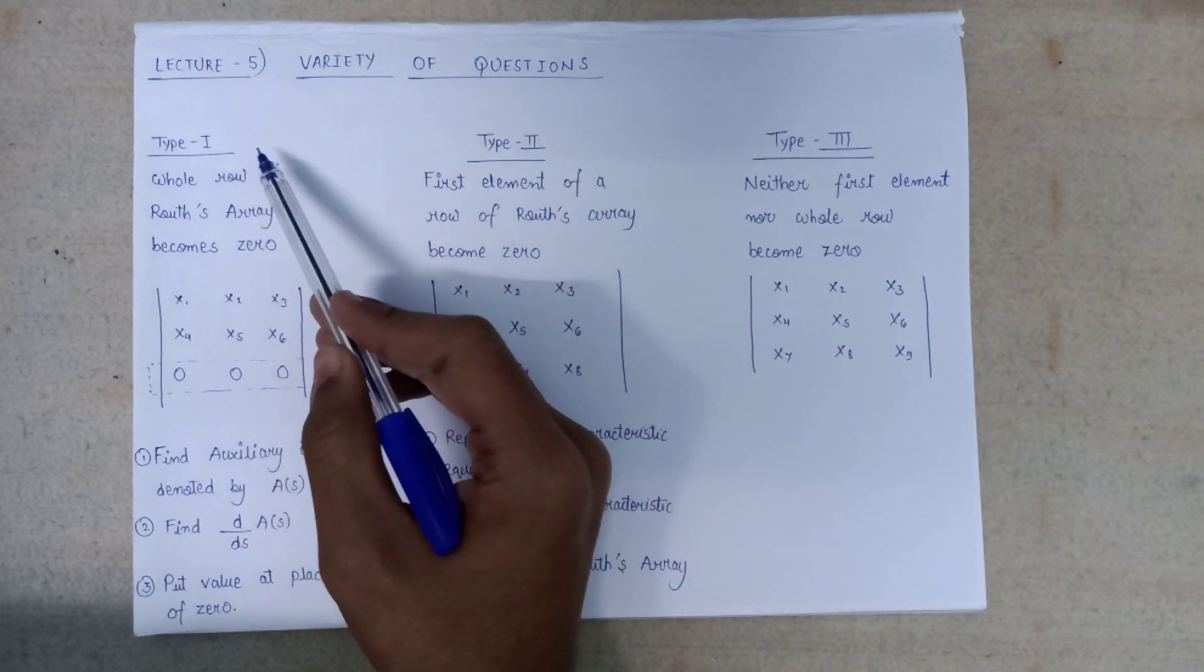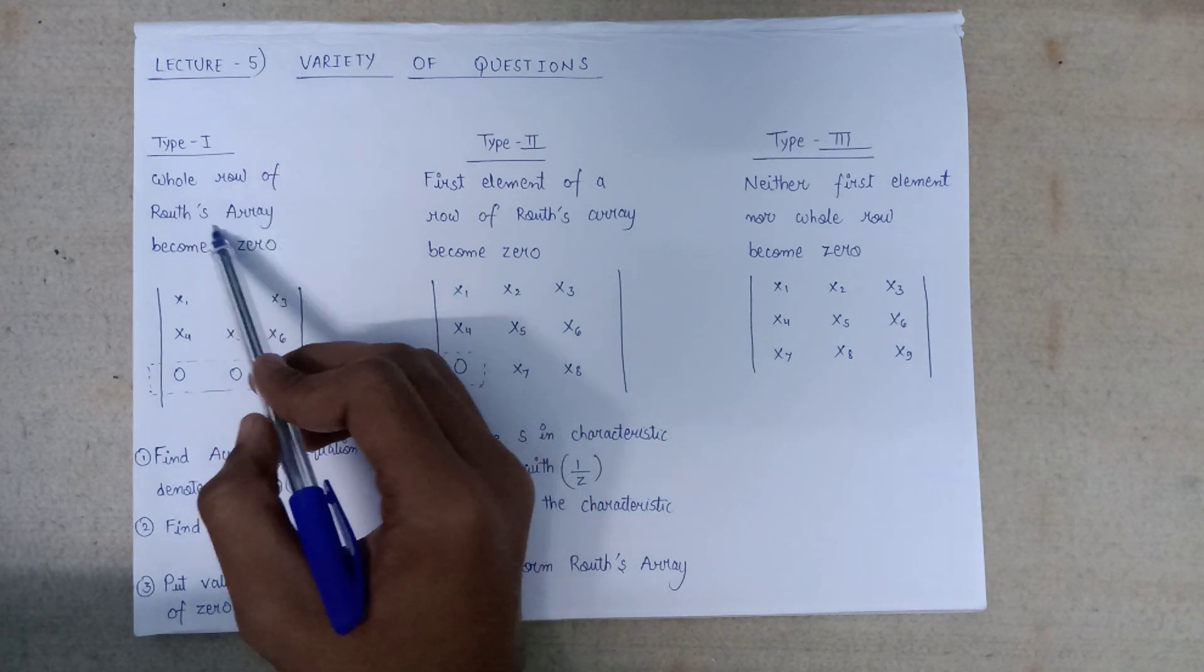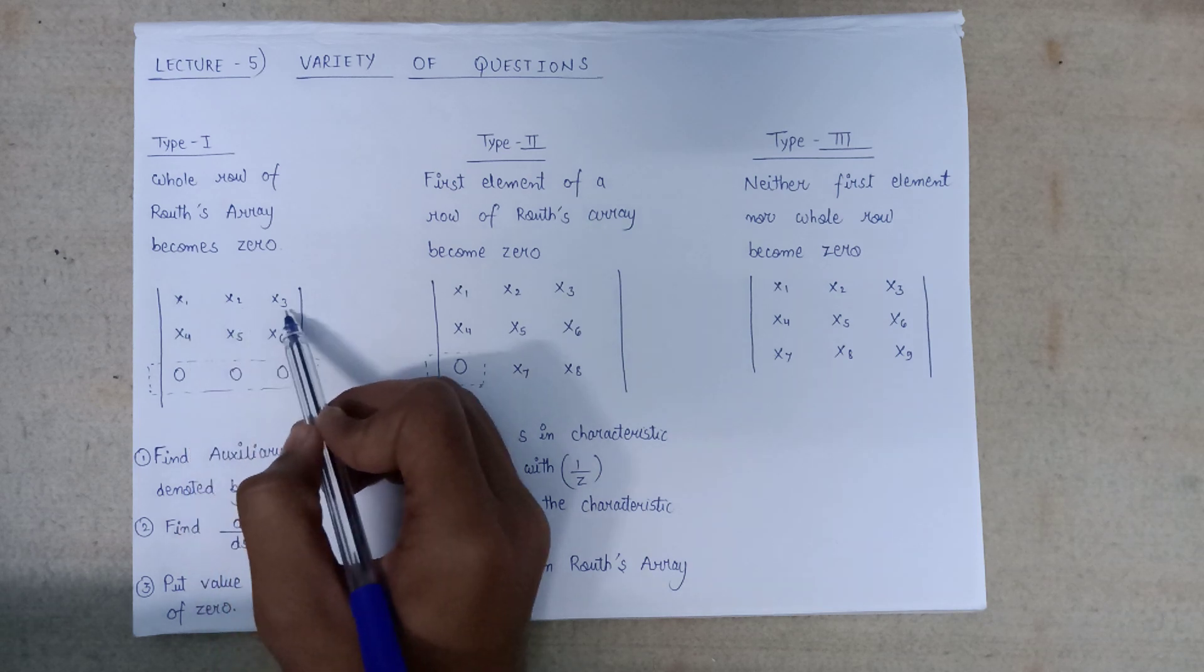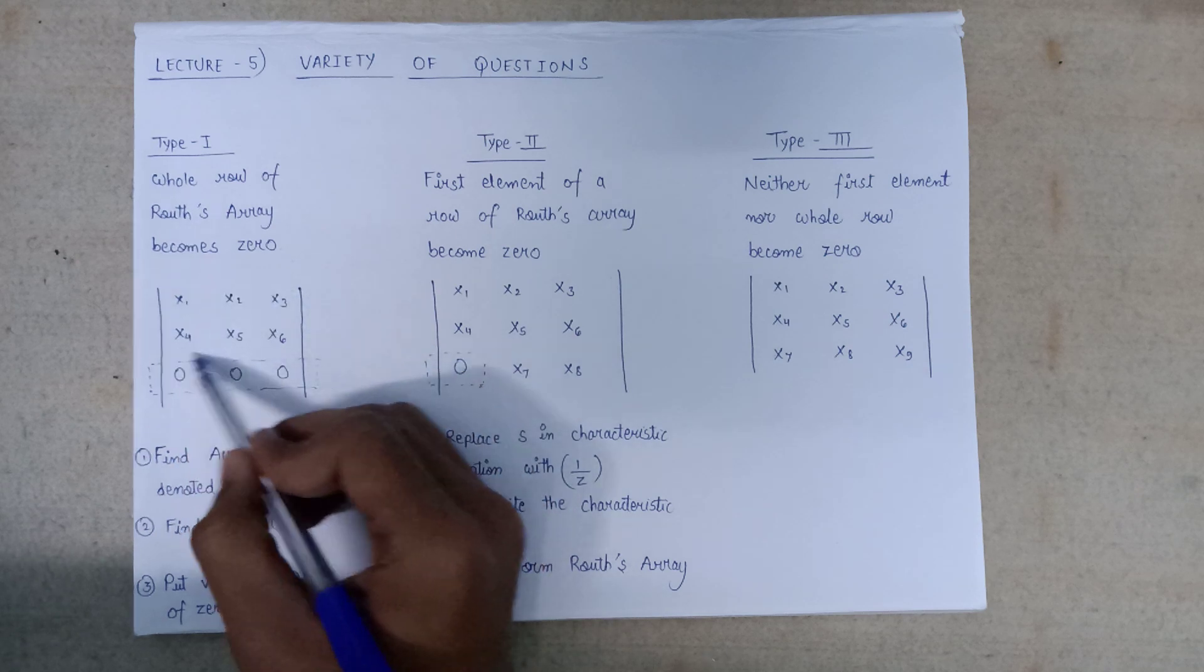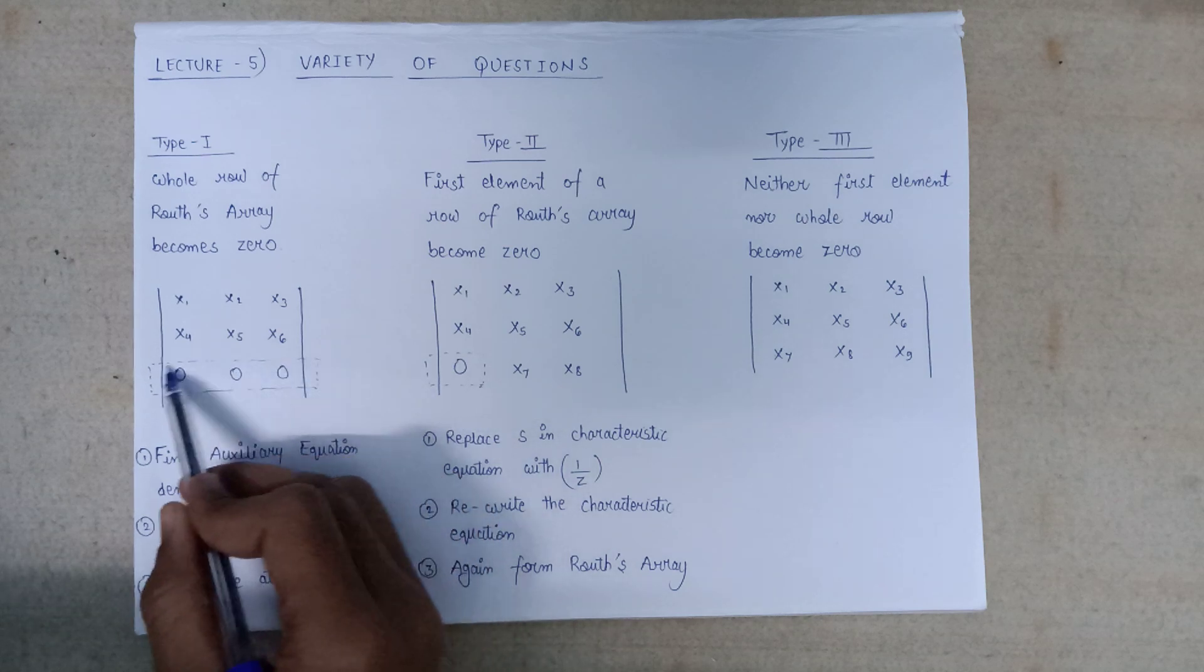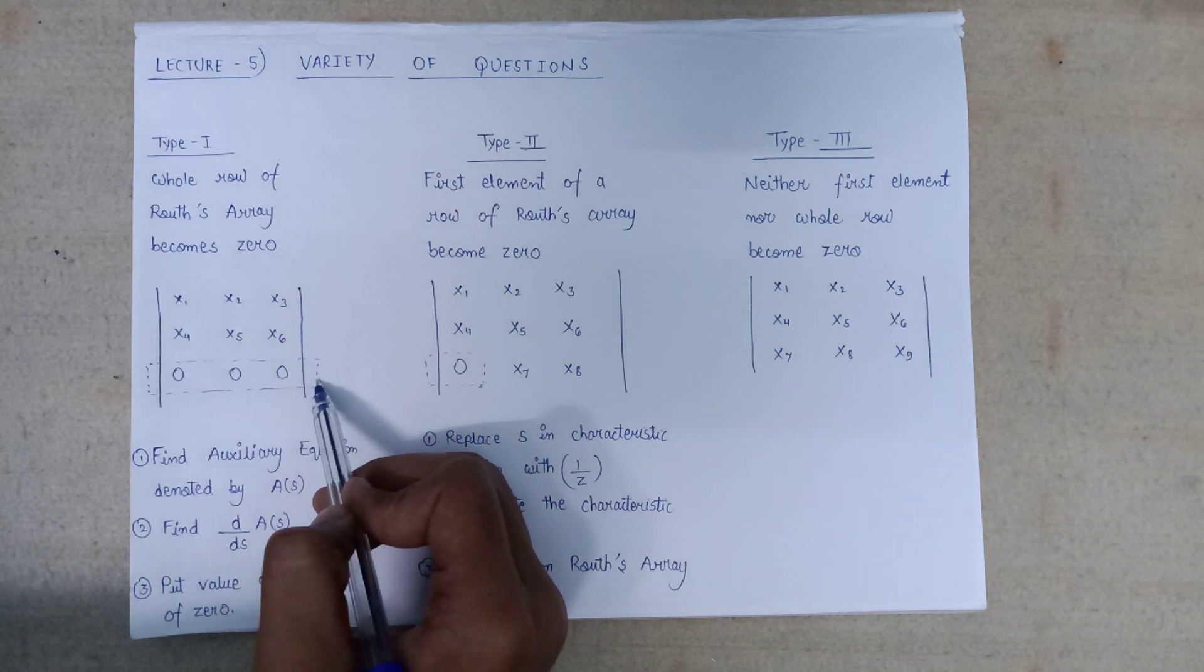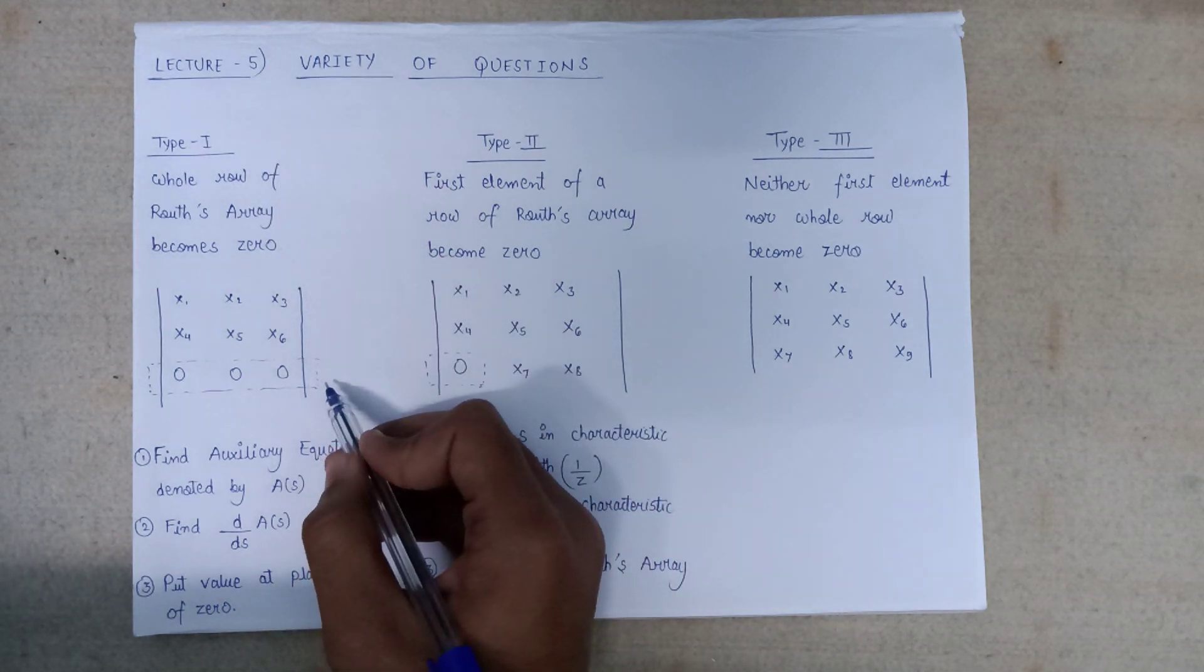Let's discuss Type 1 questions. In Type 1 questions, the whole row of the Routh array will become zero. The Routh array will be represented like this, in which x1, x2, x3, x4, x5, and x6 are non-zero values. Any entire row of the Routh array will become completely zero. This type of question comes under the Type 1 category. How do we solve this type of question?